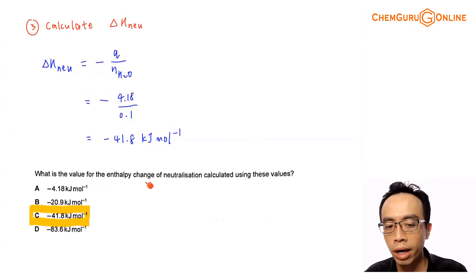What is the value for enthalpy change of neutralization calculated using these values? It is minus 41.8. So if I run through my options A, B, C, D, C will be my answer.